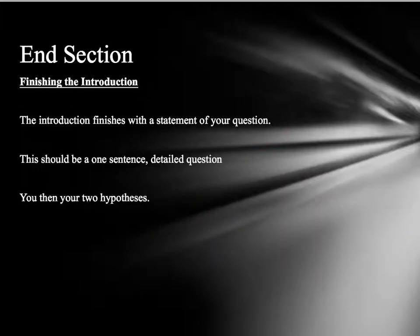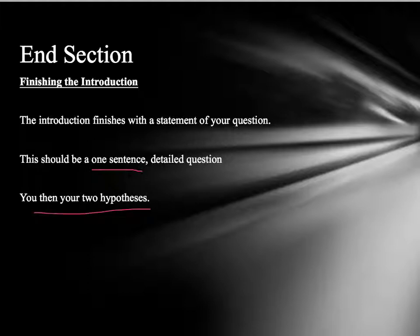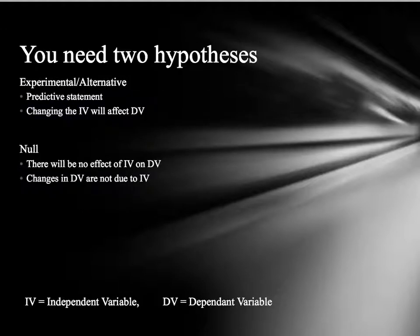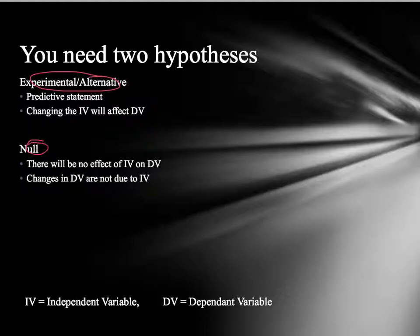The end of your introduction finishes with a sentence which states your question — just one sentence. You can literally finish it as: 'In conclusion, the question for this project will be...' followed by your question. You then need to state your two hypotheses, which are your predictions. You have one hypothesis which says there will be some sort of effect in your study, and a second hypothesis which states there will be no effect. These should be one sentence each, labelled as the experimental and the null.